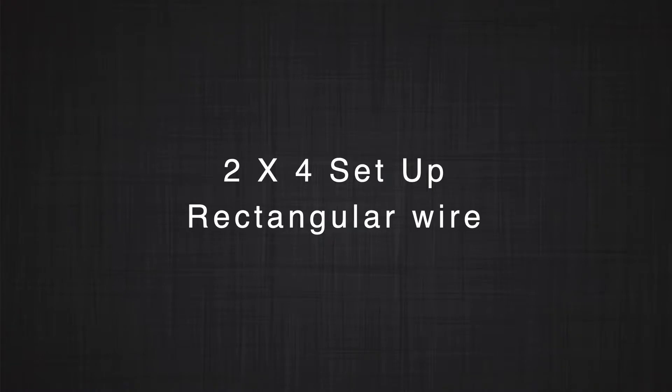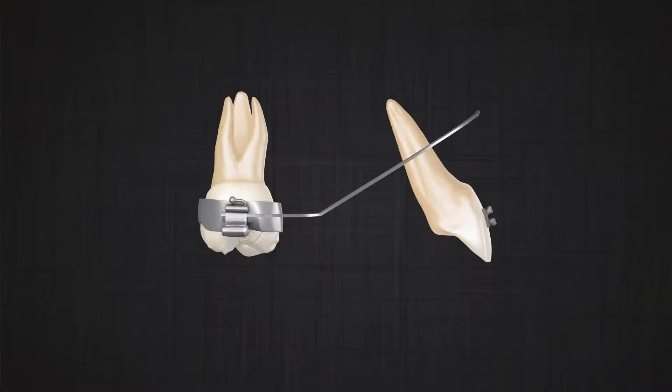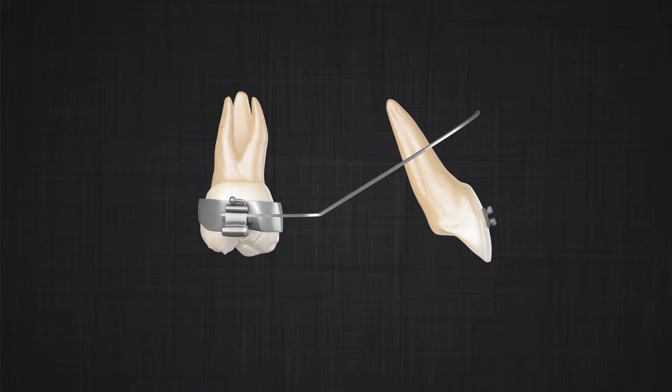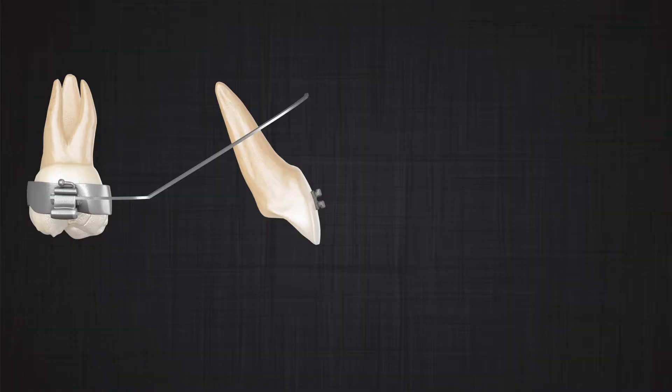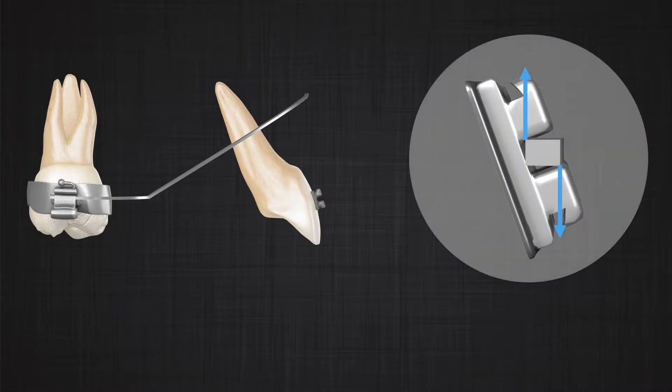What happens if we have a rectangular wire? In a rectangular wire, three variables appear in the system. One is the position of the V-band. Two is the differential width between the bracket in sagittal view in the molar and the incisors — that can affect your system significantly. And the third is the angulation of the bracket. The interaction between these three variables changes your system significantly.